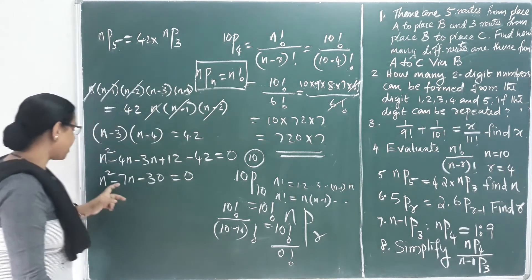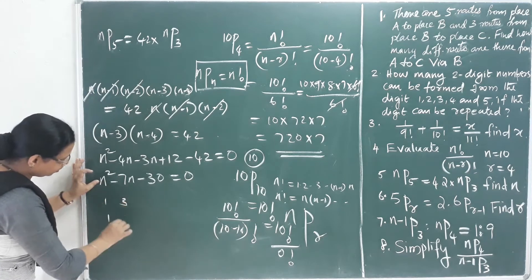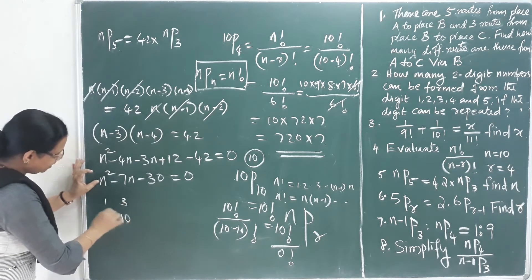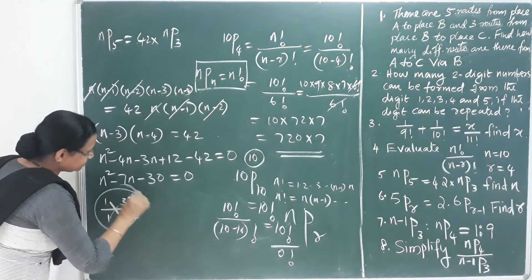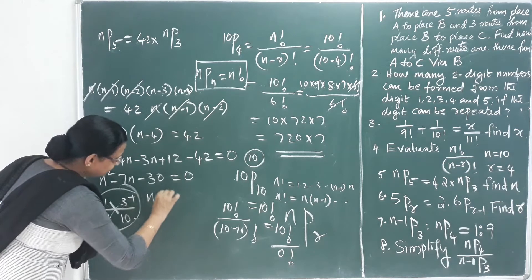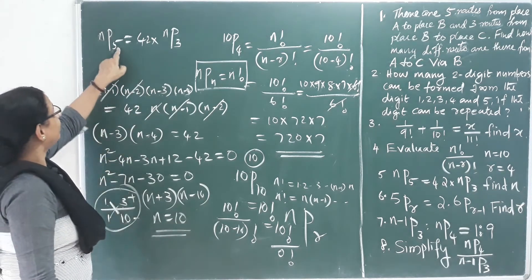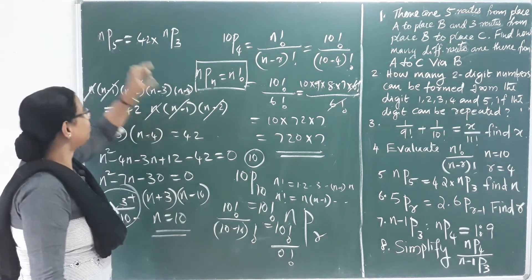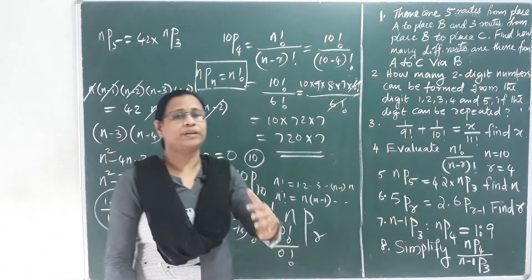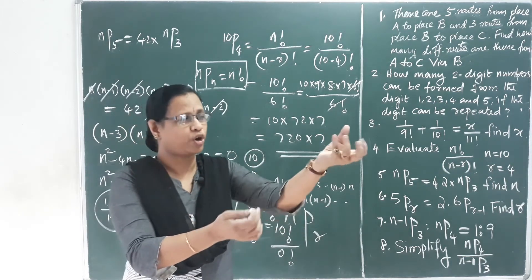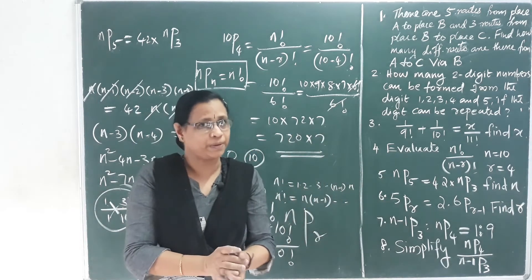This is a quadratic equation. We factorize: we need factors of 30 that differ by 7, which are 10 and 3. So we get (n − 10)(n + 3) = 0, meaning n = 10 or n = −3. Since n must be a positive counting number and we need at least 5 items for 5 arrangements, n equals 10. That is the permutation — arranging 10 numbers.